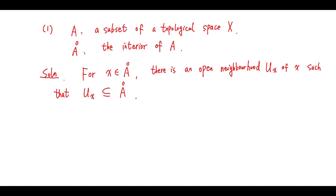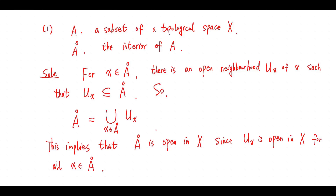Solution. For X in the interior of A, there is an open neighborhood Ux of X such that Ux is contained in the interior of A. This says the interior of A is equal to this union. This implies the interior of A is open in the space X.